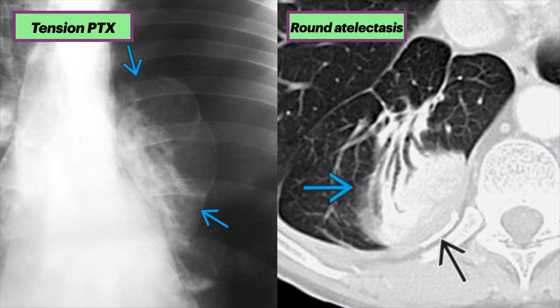Here are some pleural abnormalities causing atelectasis. The left chest x-ray in this patient with acute chest pain and shortness of breath shows a large left tension pneumothorax, producing marked left lung atelectasis and mass effect on the mediastinum. The case on the right is round atelectasis. The axial CT in this patient with asbestos-related pleural disease shows bilateral lower lobe rounded atelectasis exhibiting the comet tail sign, characterized by the curvilinear morphology of the bronchovascular bundles. Note the adjacent calcified pleural plaques seen by the black arrow.